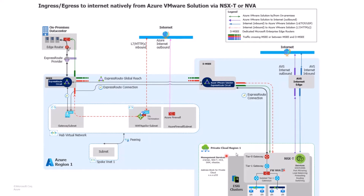Traffic between AVS and Azure still does remain the same. You're going to have an ExpressRoute connection still back to Azure. When we look at some of our flows here, one of the things you're going to notice is your Global Reach connection. Traffic is still going to go out via your Global Reach, which is this green line, right up to on-premise. And again, you're still going to have an ExpressRoute connection back to Azure, which is what's going to give you that connectivity to Azure resources.